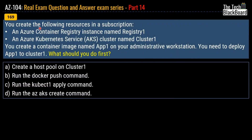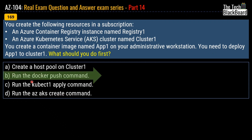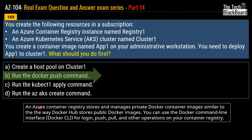Question number 169 says you create an Azure container registry named registry 1 and an Azure Kubernetes service cluster named cluster 1. You create a container image named app 1 on your administrative workstation and need to deploy app 1 to cluster 1. What should you do first? The correct answer is option B, run the docker push command. An Azure container registry stores and manages private Docker container images similarly to how Docker Hub stores public images. You can use the Docker CLI for login, push, pull and other operations on your container registry.